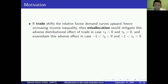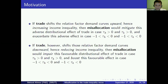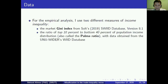I do not model trade here, leaving it to the empirical part. But if trade shifts the relative factor demand curves upward — meaning trade increases inequality — then misallocation would mitigate this adverse distributional effect of trade if both skilled labor and capital distortions are greater than zero. For the empirical analysis, I use two different measures of income inequality: the market Gini index from the Standardized World Income Inequality Database, and the ratio of the top 10% to bottom 40% of the population income distribution — the Palma ratio — from the United Nations University World Income Inequality Database.